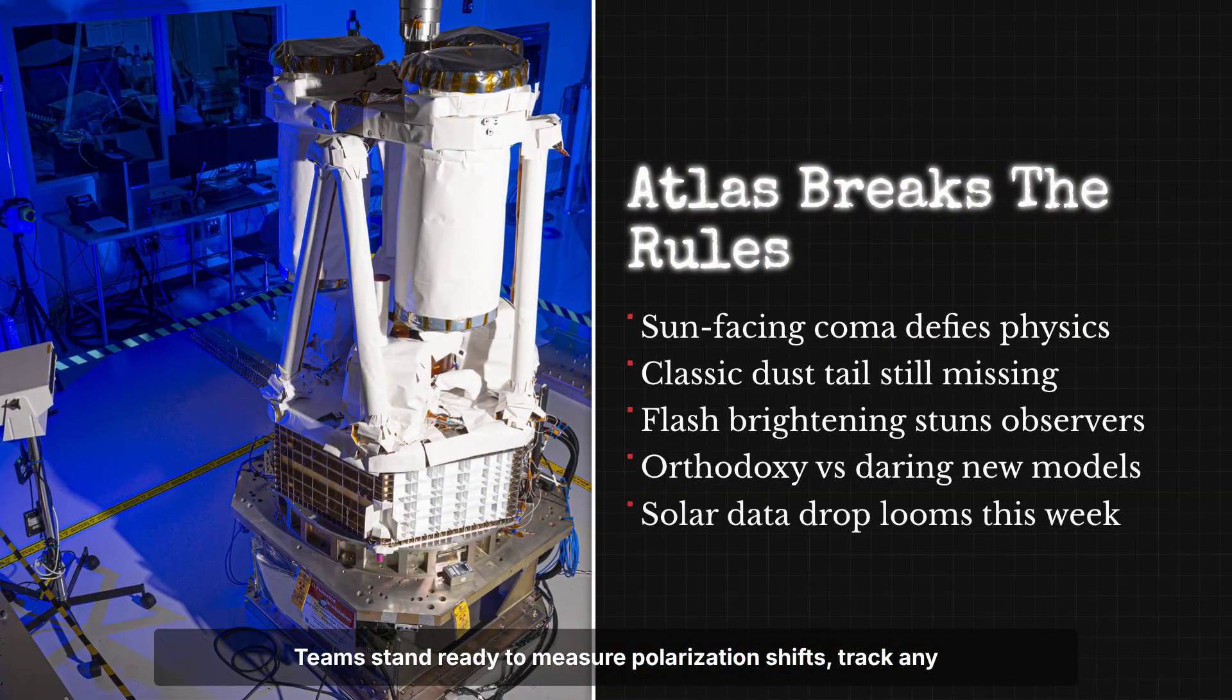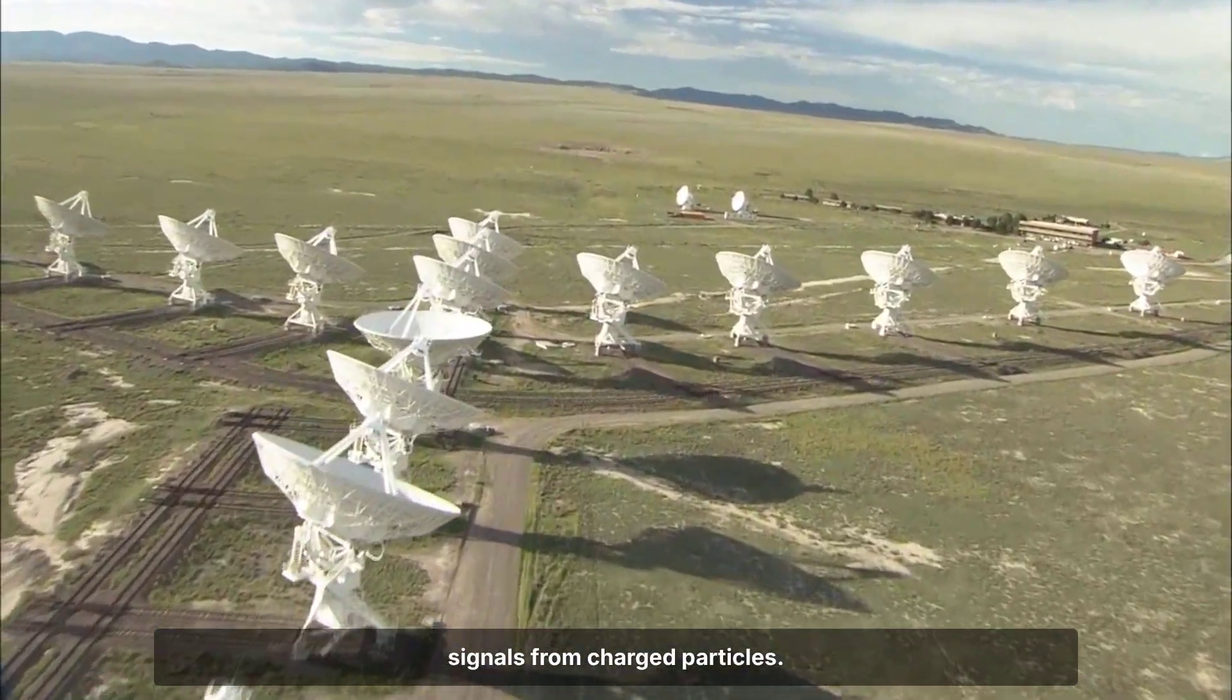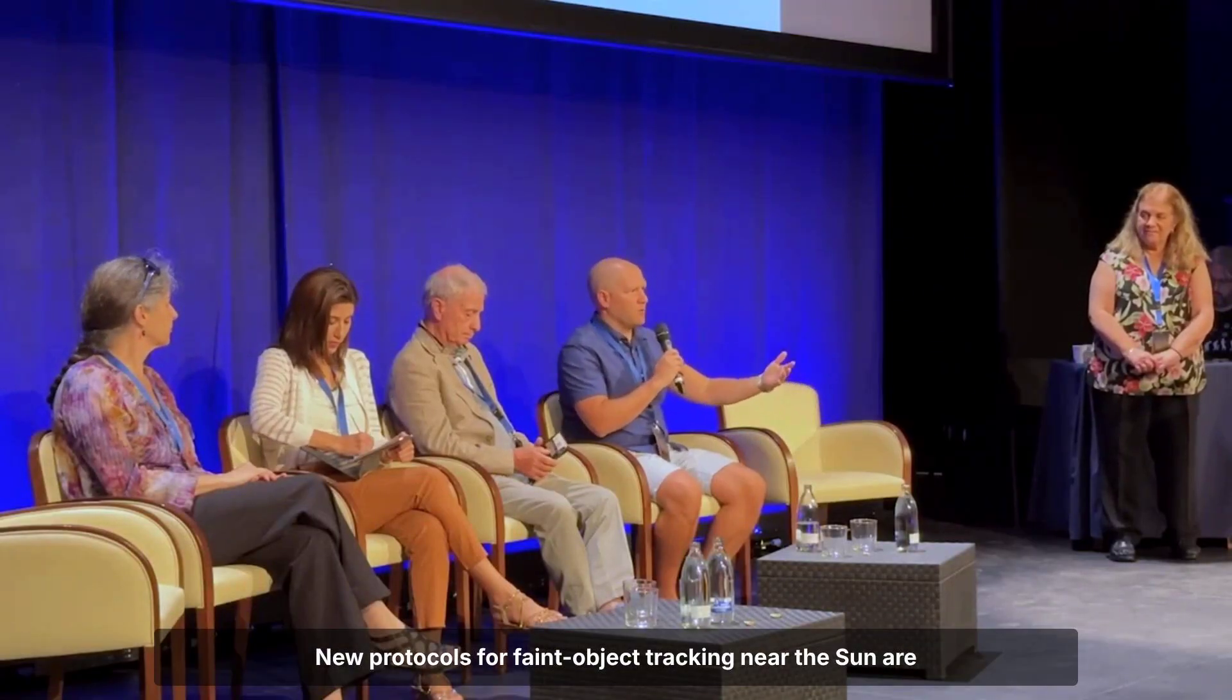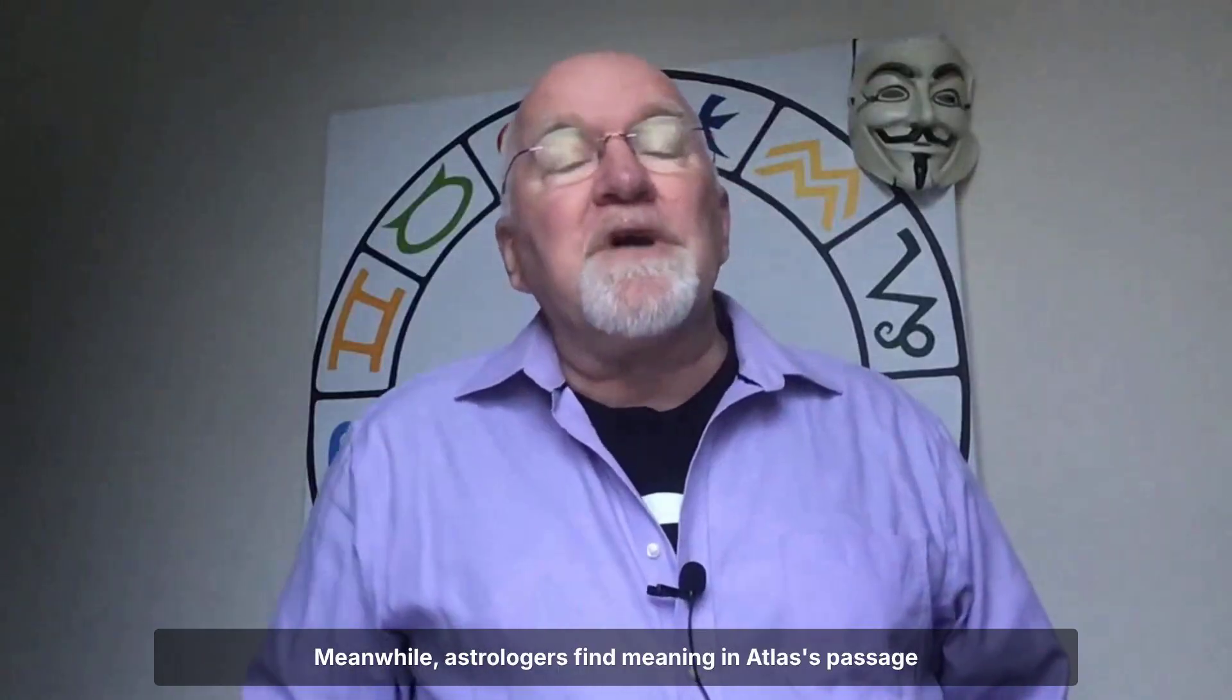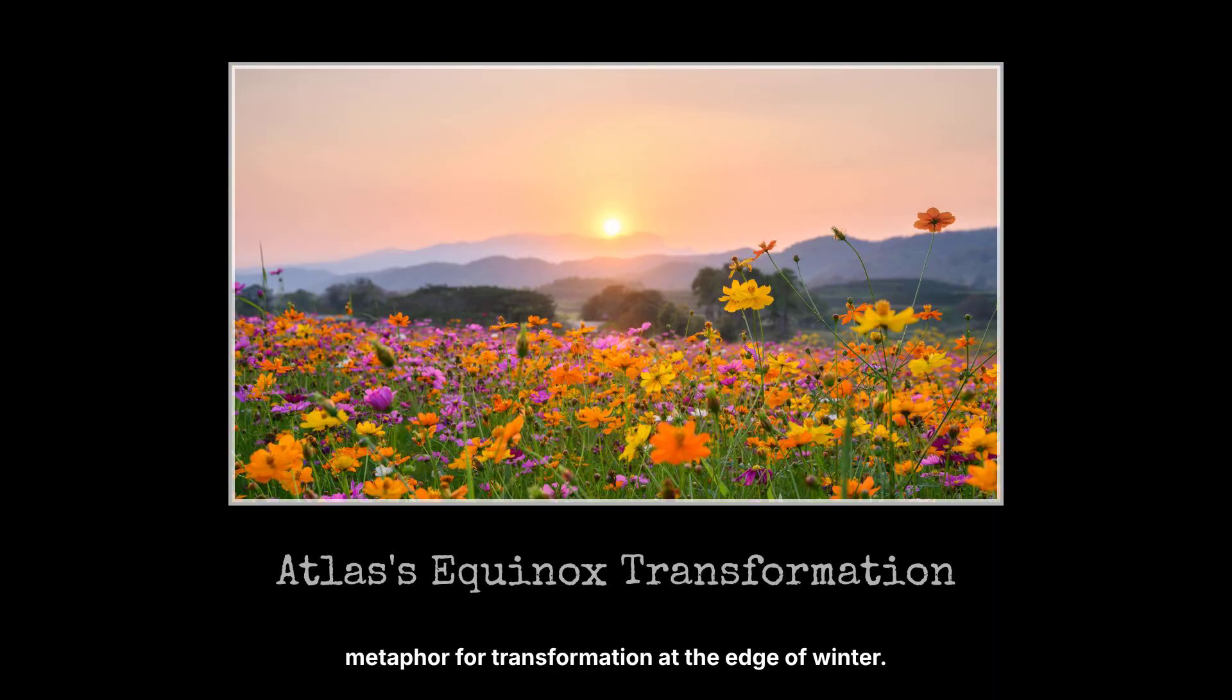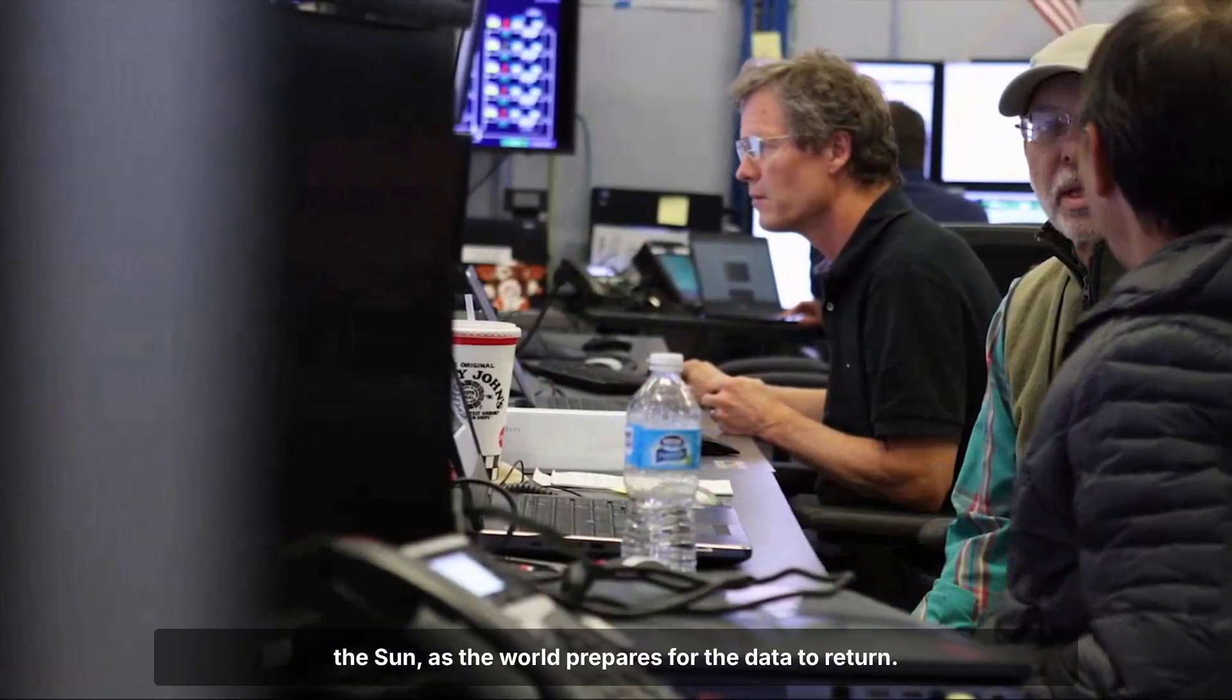With the blackout in effect, anticipation builds for the next window of observation. Teams stand ready to measure polarization shifts, track any deviation in the hyperbolic path, and listen for radio signals from charged particles. New protocols for faint object tracking near the sun are already in draft, fueled by the lessons of this encounter. Meanwhile, astrologers find meaning in Atlas's passage through Virgo, aligned in a grand cross, a celestial metaphor for transformation at the edge of winter. For now, every unanswered question waits on the far side of the sun as the world prepares for the data to return.